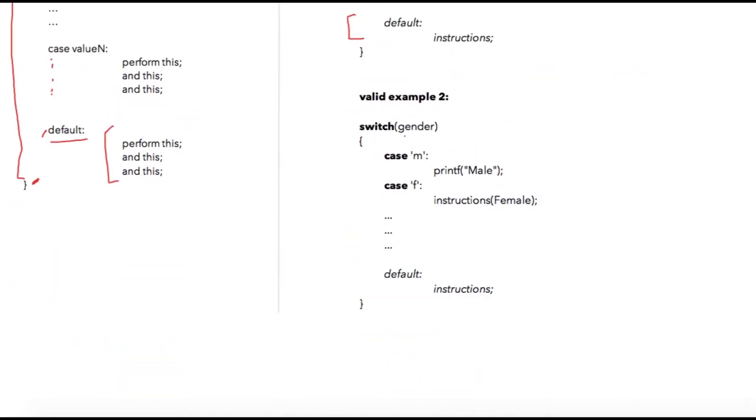Let us take another example. I am using a character variable over here as gender. Suppose user has entered m, in that case this block will be executed. In case of f, this block will be executed, else the default case will be executed.